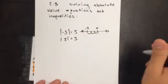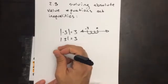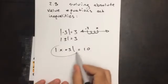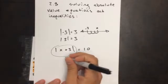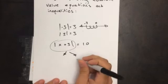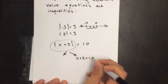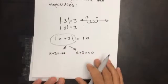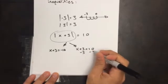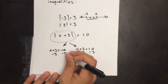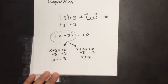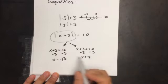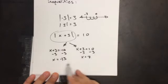When solving equations with absolute value, take something like the absolute value of x plus three equals 10. That means the expression is 10 units away from zero. I set up two equations: x plus three equals 10 (without the absolute value), and x plus three equals negative 10 (changing the sign). Solving gives x equals seven and x equals negative 13. When doing absolute values, you should get two answers — there are a couple of special cases, but most of the time you'll get two.